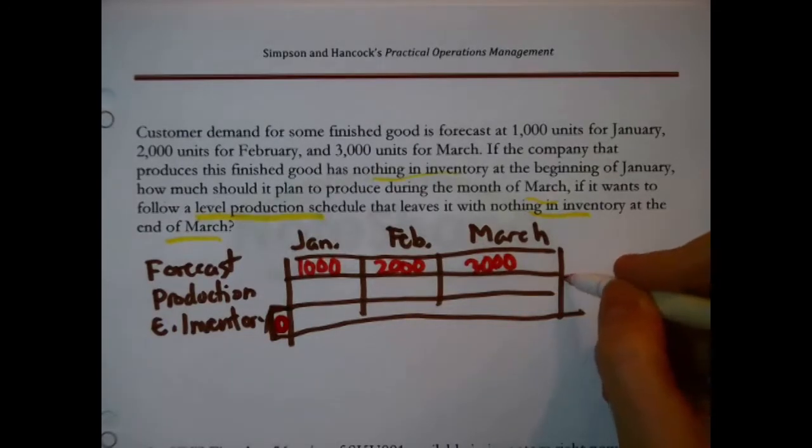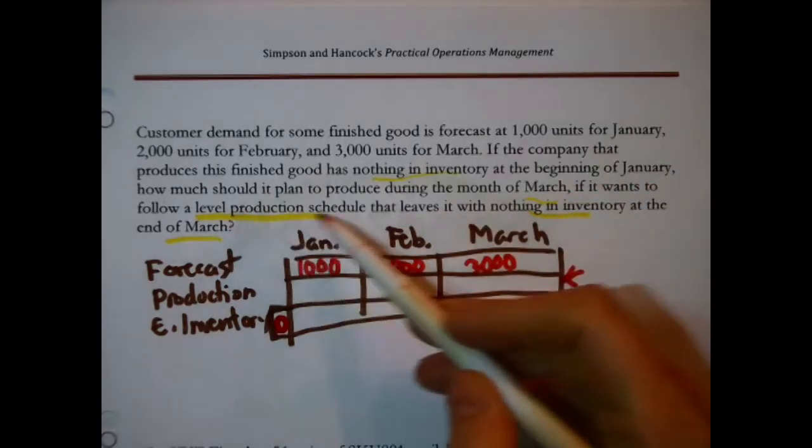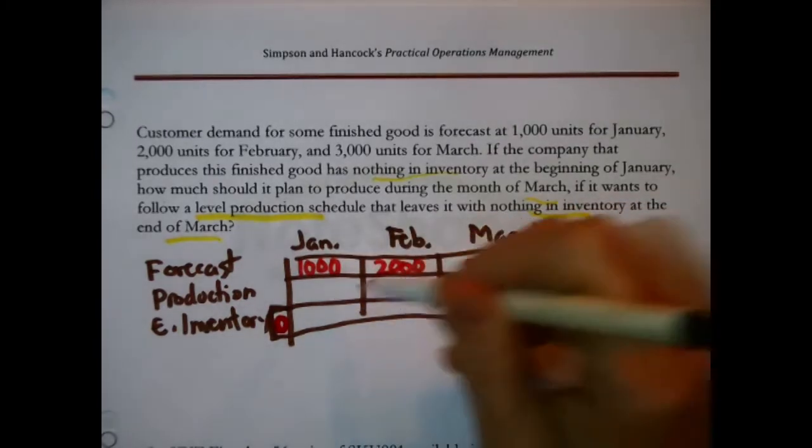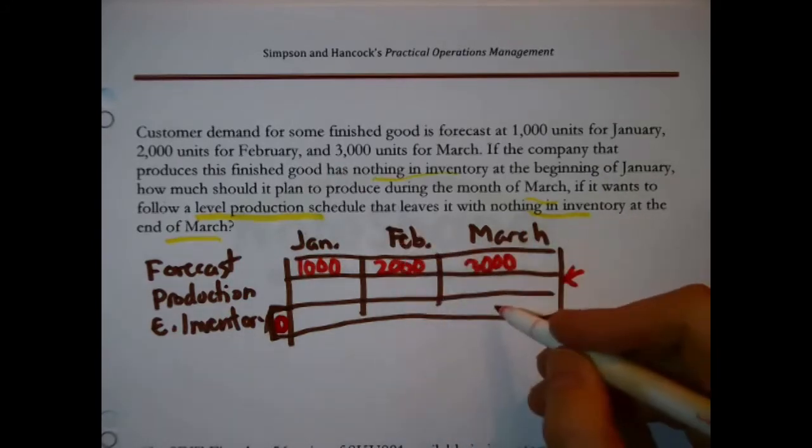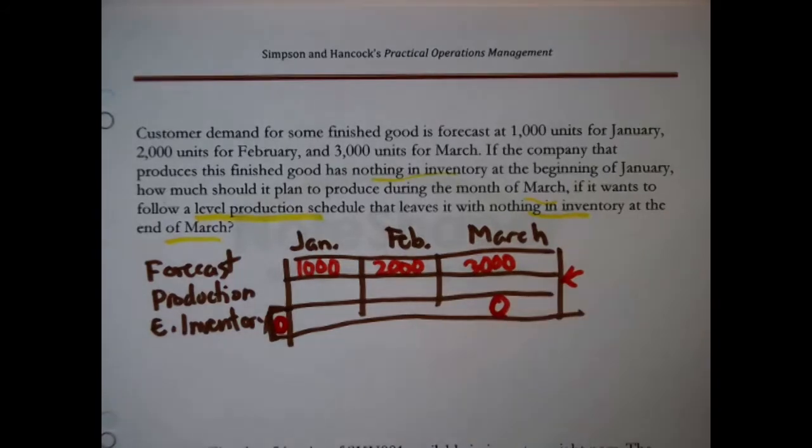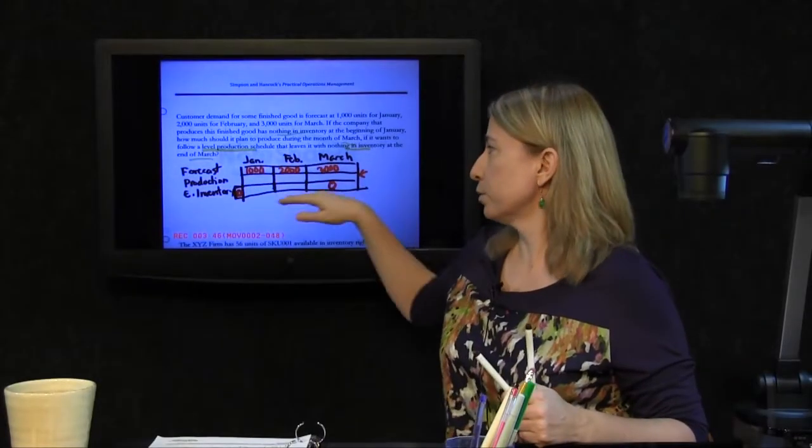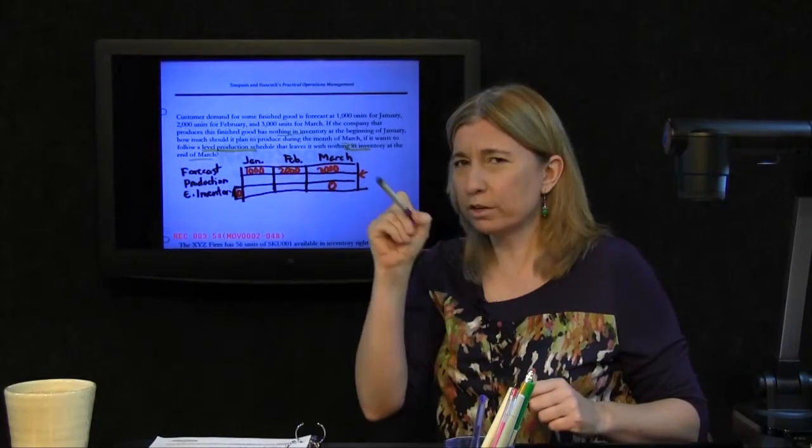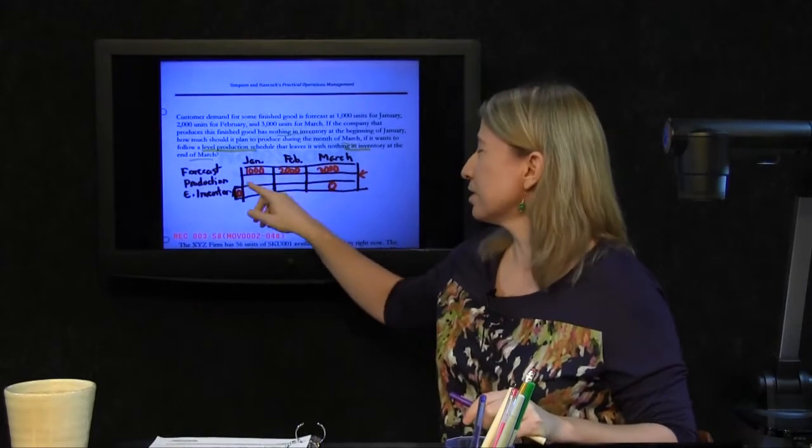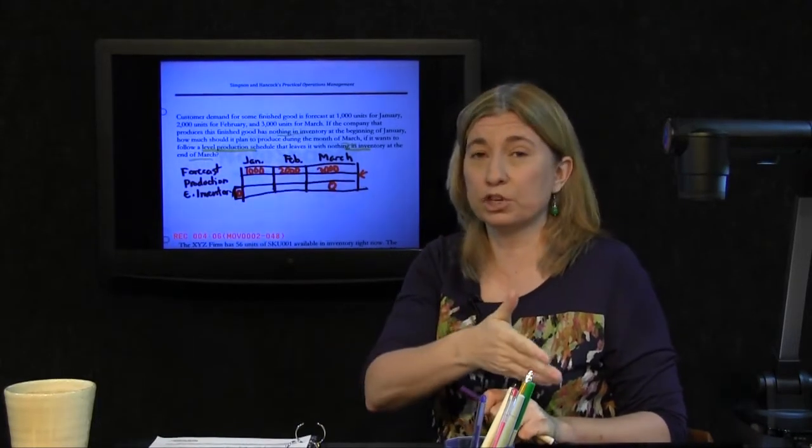What's the question? What should they produce in March? How am I supposed to figure out exactly what they should produce in March? They gave some hints. Follow a level production schedule. That means, logically, that should be the same number in each one of these boxes for production. A level production schedule means you do the same thing each month, and there was another hint that leaves it with nothing in inventory at the end of March. My bottom row here is ending inventory each one of these periods, and they sort of fixed that. They said you want to end with absolutely nothing.